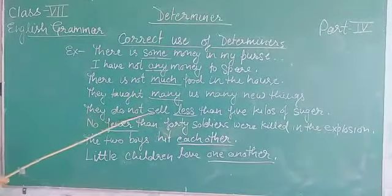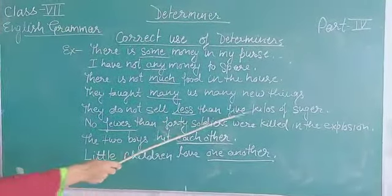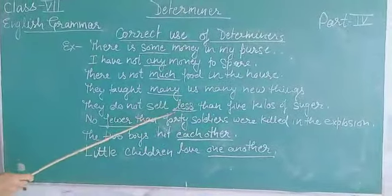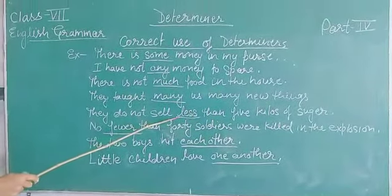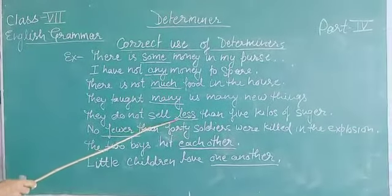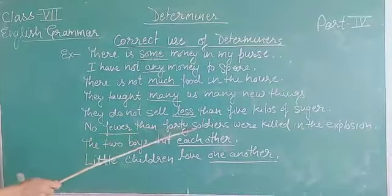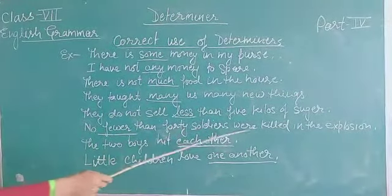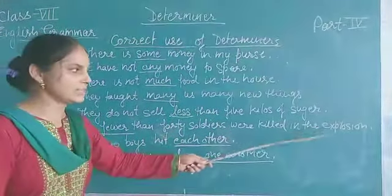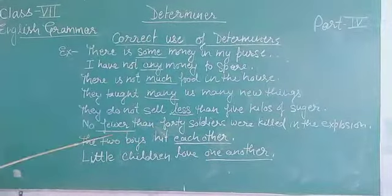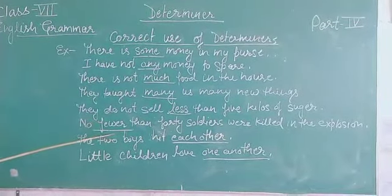Number five: they do not sell less than five kilos of sugar. 'Less' is used for quantity. Number six: no fewer than forty soldiers were killed in the explosion. 'Fewer' is used for numbers.